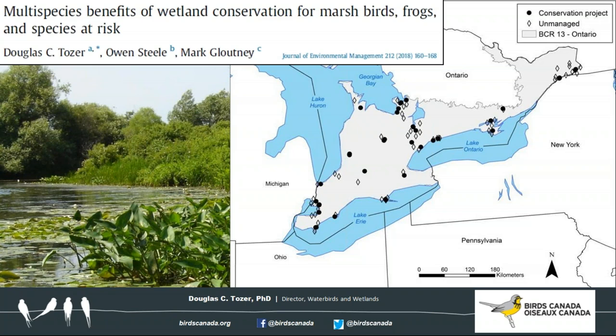In response, we used Great Lakes MMP data to fill these knowledge gaps. In the first paper, we measured occupancy of marsh birds and frogs in marshes managed as conservation projects under NAWMP compared to nearby unmanaged marshes throughout southern Ontario. Occupancy is simply the proportion of locations occupied by at least one individual of a species — for example, 0.2 means a species occurs at 20% of locations. The extensive nature of the Great Lakes MMP allowed us to overcome the limitations of previous studies, with about 40 NAWMP conservation project marshes and a similar number of nearby unmanaged marshes.